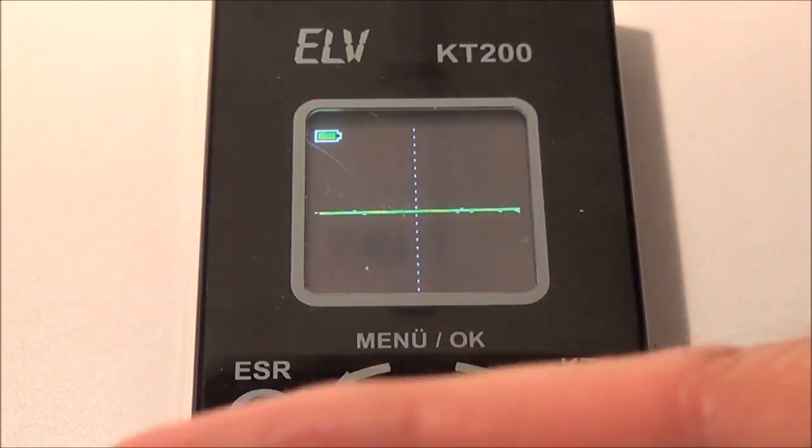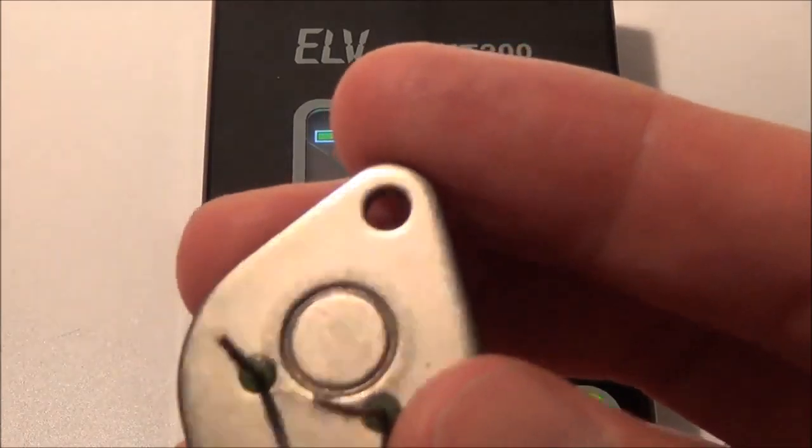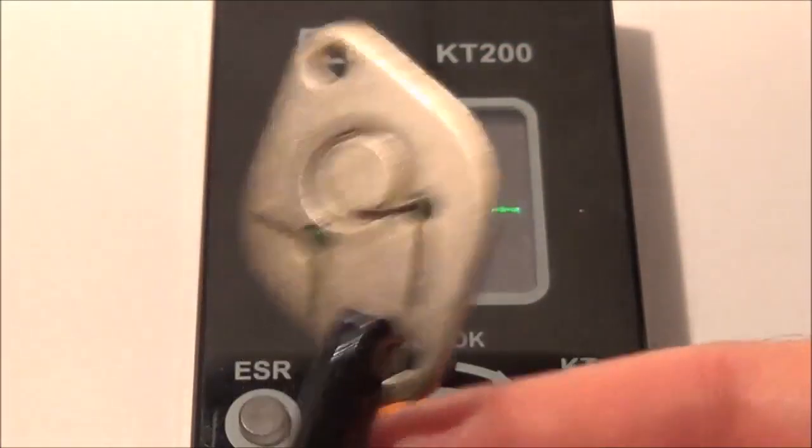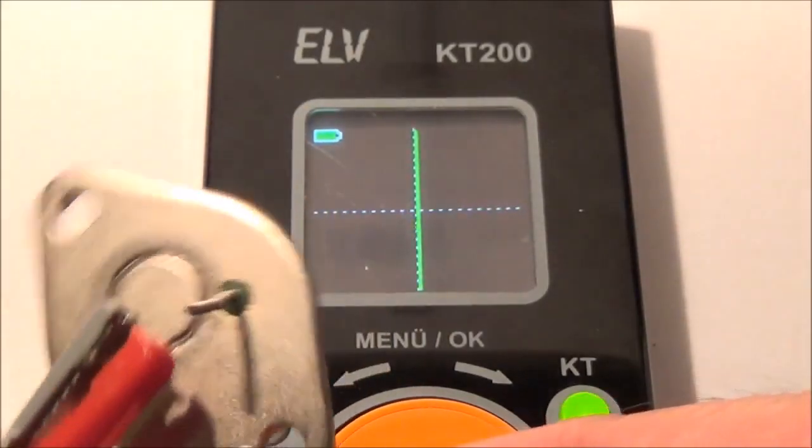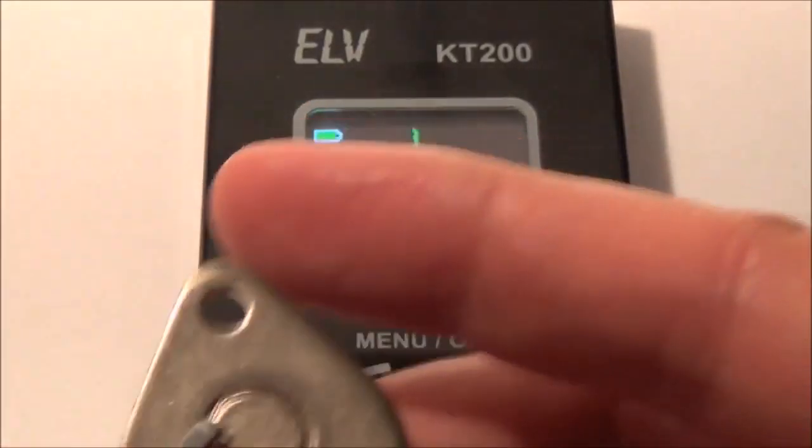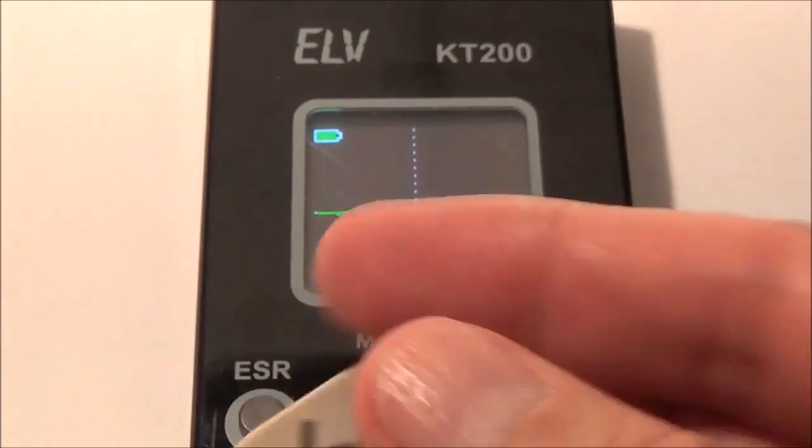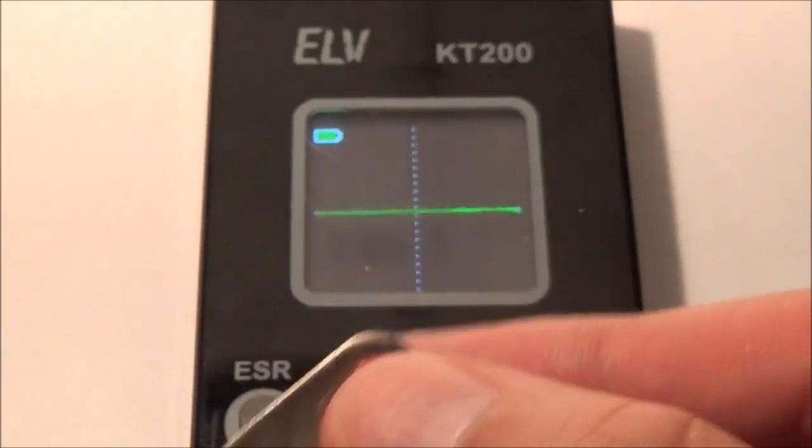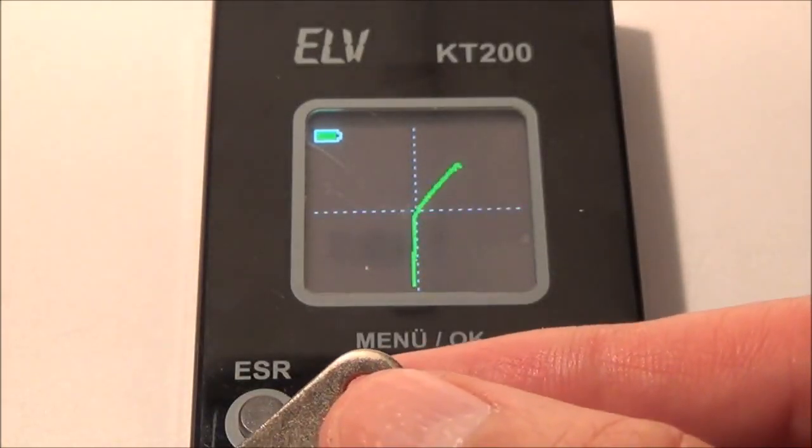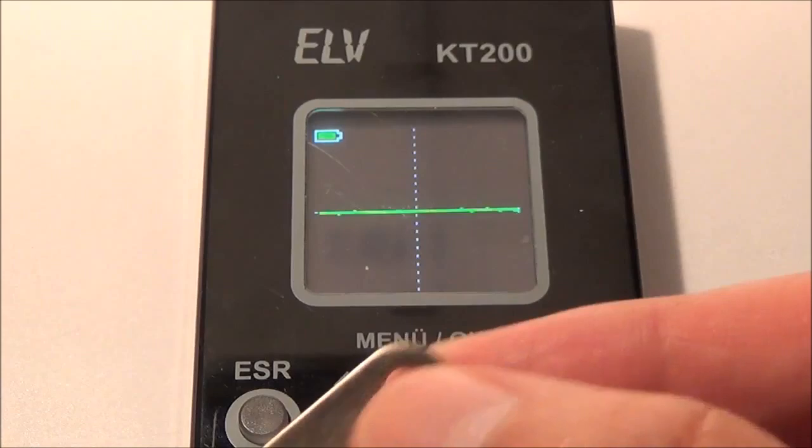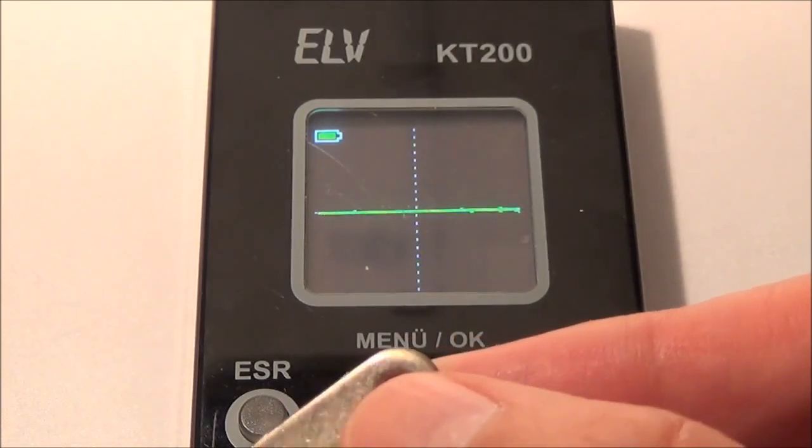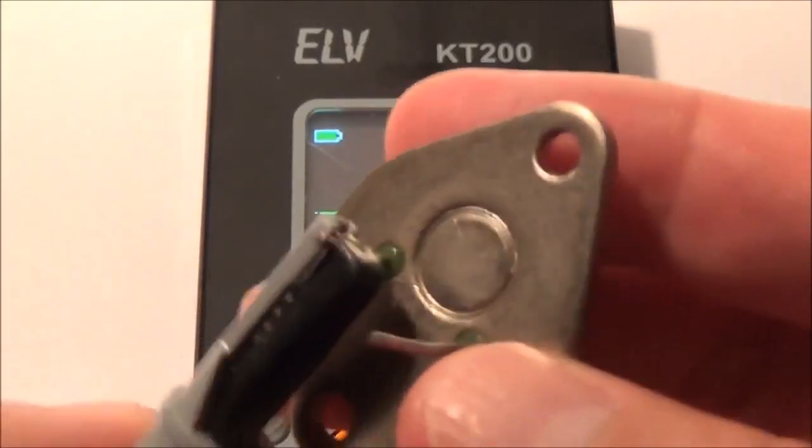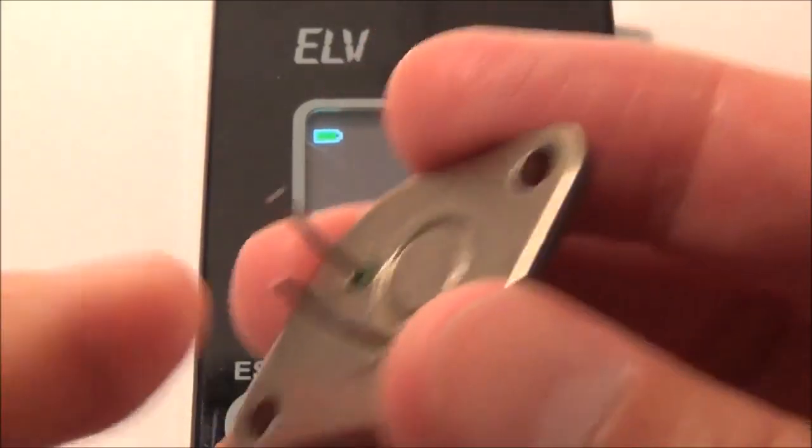Now, back to the bad transistor. Let's go ahead and check between the collector and the emitter. That is a dead short. Now, we'll go ahead and check between the emitter and the base. That doesn't look good. Now, between the base and the emitter, that doesn't look good either. So, this one is definitely bad.